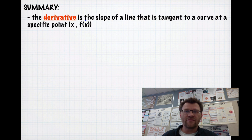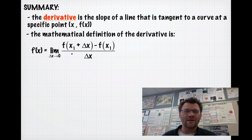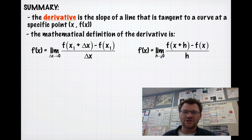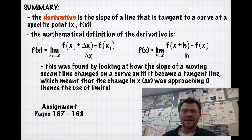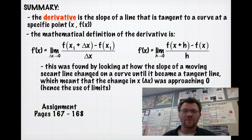In summary: the derivative is the slope of a line tangent to a curve at a specific point x comma f of x. The mathematical definition is f prime of x equals the limit as delta x approaches 0 of f of x plus delta x minus f of x, all over delta x — or equivalently, the limit as h approaches 0 of f of x plus h minus f of x, all over h. This was found by observing how the slope of a moving secant line changed on a curve until it became a tangent line, meaning delta x approached 0, hence the use of limits. Your assignment is on pages 167 to 168.